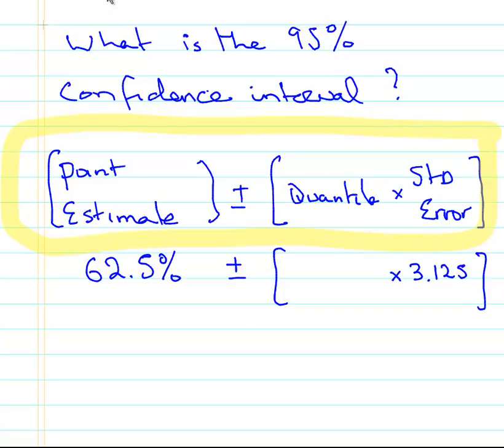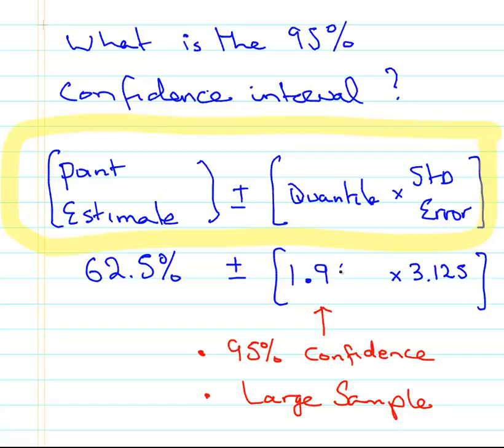Now the quantile is something I'm interested in now. It's 95% confidence, and we have a large sample. If you're not sure where this comes from, this is not the time to explain it, but you should end up with a value here. When you learn what this process is, you should end up with the value of 1.96. So 95% confidence.